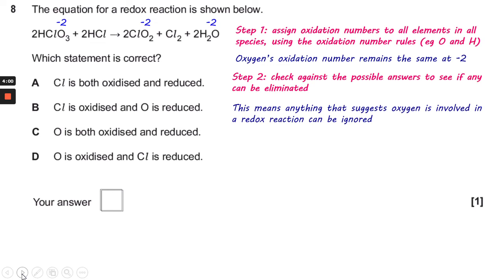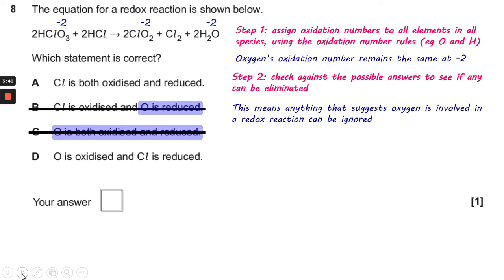So anything that suggests oxygen is involved in a redox reaction can be ignored. Looking at answer B, for example, we can ignore that because it suggests oxygen is reduced — and clearly it's not. Looking at C, it suggests oxygen disproportionates, being both oxidised and reduced — no, that doesn't happen either. In D it says oxygen is oxidised — we've clearly proven that doesn't happen as well.